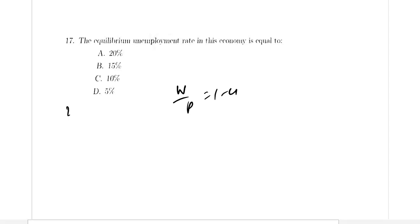W/P equals 1 minus U. Price setting is 25% markup over the nominal wage, which implies P equals 1 plus 0.25 multiplied by W, which is 1.25W.